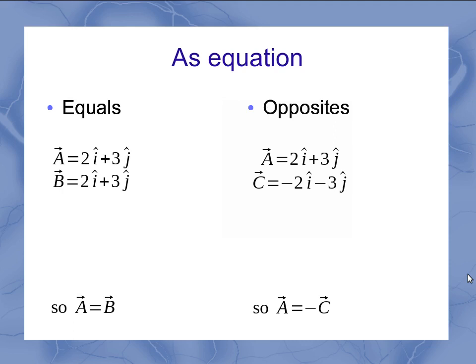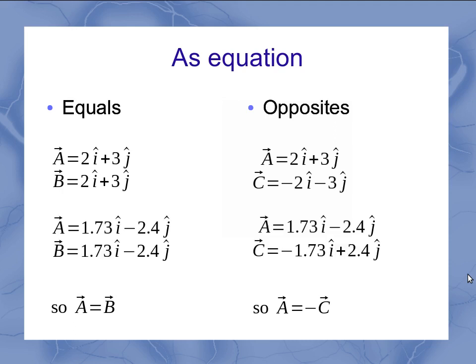So far we've had nice integers, but when talking about vectors it can be any number. For example, vectors a and b are still equal because they have exactly the same numbers and the same signs for each component. And over here, a and c are still opposite to each other — they've got the same numbers in both cases but opposite signs. In this case, a is positive and c is negative for the i component, whereas a is negative and c is positive for the j component. If I were to multiply the c equation by negative 1, I'd get exactly the same equation as a.